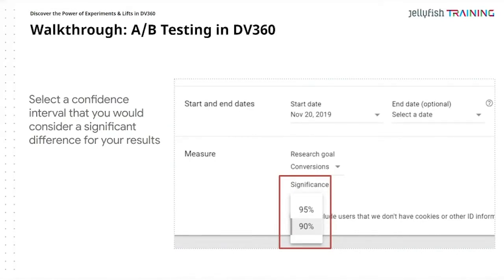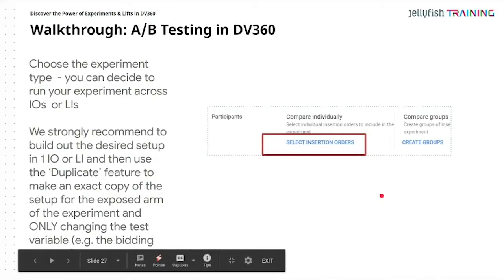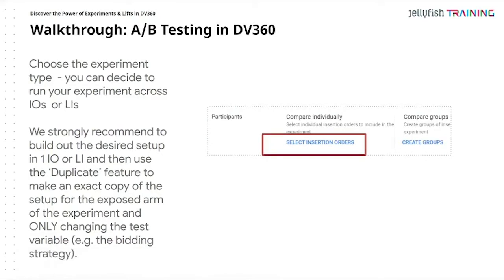You select your confidence interval — how confident are you that this is correct — and consider a significant difference in results: is it 90% or 95%? Then you choose the experiment type — are you choosing insertion orders with different targeting criteria, different line items, or comparing two campaigns? We strongly recommend building out the desired setup and duplicating the campaign so it is 100% similar with no human error, then changing only the test variable — bid strategy, creative, whatever it is.